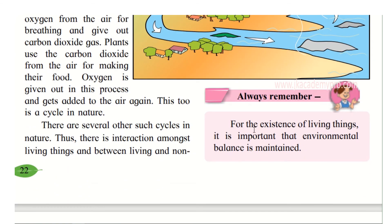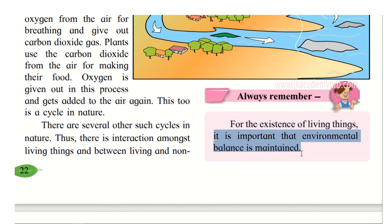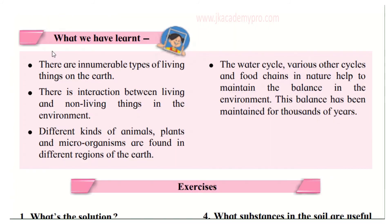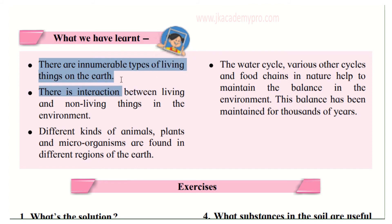For the existence of living things — for living things to survive on this earth — it is important that environmental balance is maintained. We should not harm the environment in any way. Now let's recollect what we learned: there are innumerable types of living things on Earth, and there is interaction between living and non-living things in the environment.